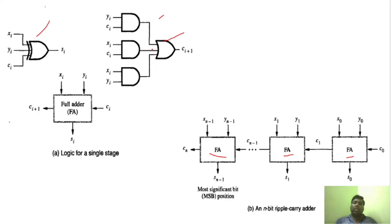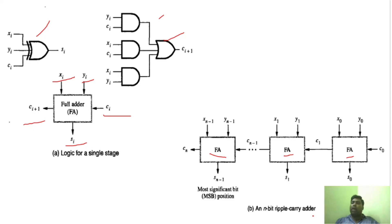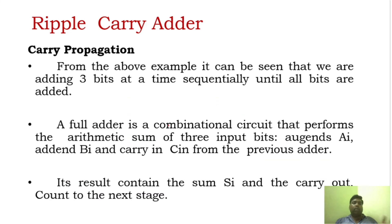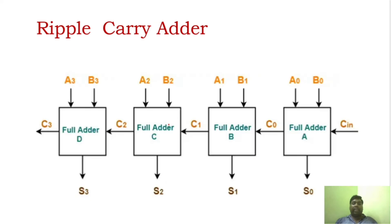What is the full adder operation? You have 3 inputs: XI, YI, and CI (carry in). And it will produce 2 outputs: sum and carry out. So every full adder in the ripple carry adder performs the same operation — it has 3 inputs and 2 outputs, where one of the outputs is carry.